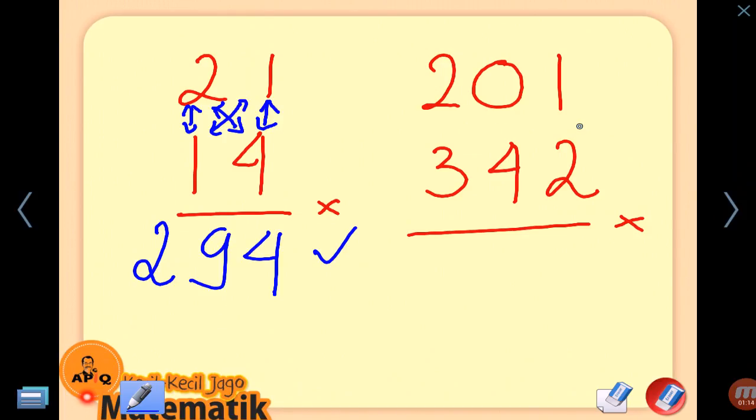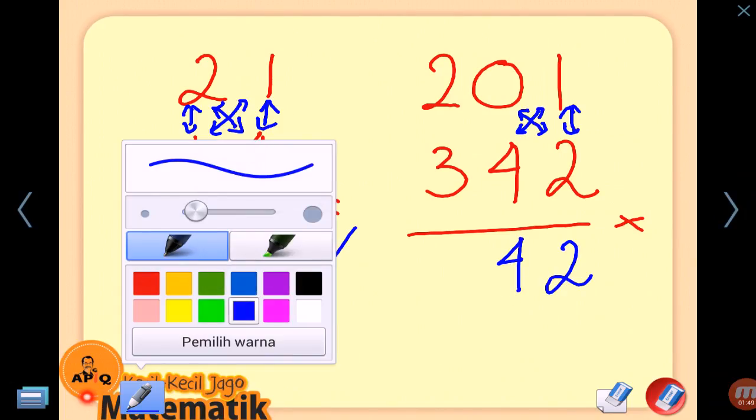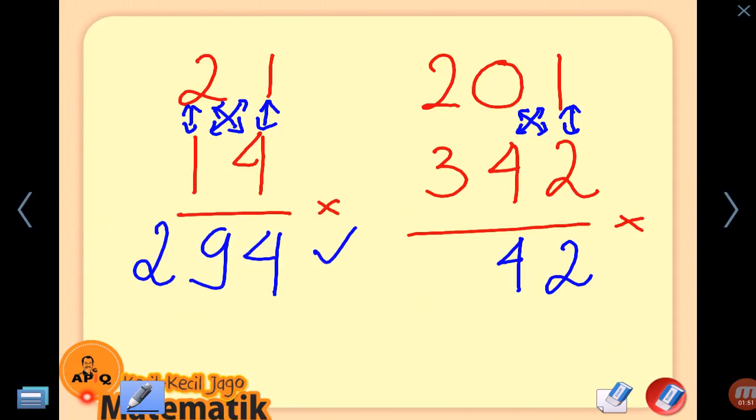3 digit multiplied by 3 digit: 201 multiplied by 342. First step: 1 times 2 is 2. Second step: 0 times 2, 0 times 1 is 1, 0 plus 1, 0 plus 4, we get 4. Yeah, we get 4. And the third step, the biggest step: 2 times 2, 2 times 2.